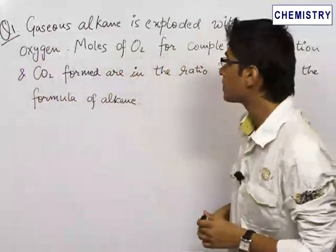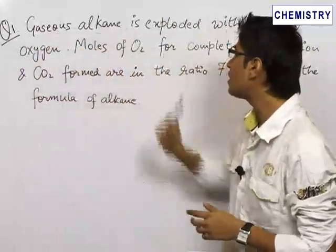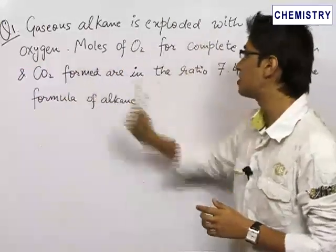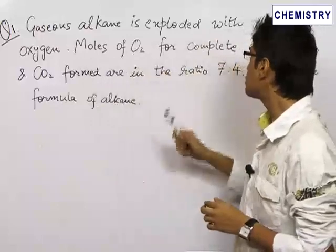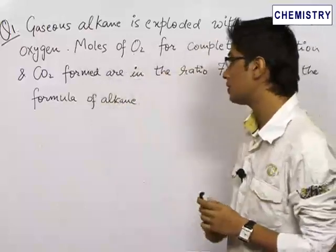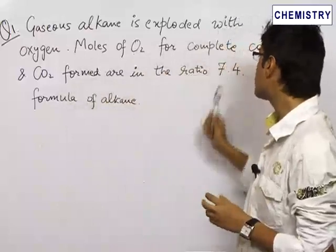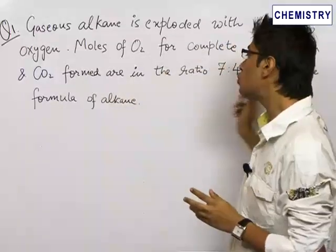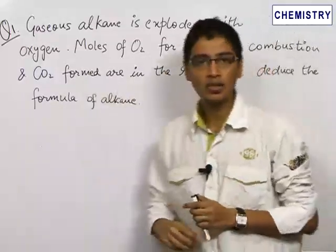The first question is we have a gaseous alkane, an unknown alkane, which is exploded with oxygen. The moles of oxygen which is required for complete combustion and the CO2 formed are in the ratio of 7 is to 4. We need to find out the formula of that unknown alkane.